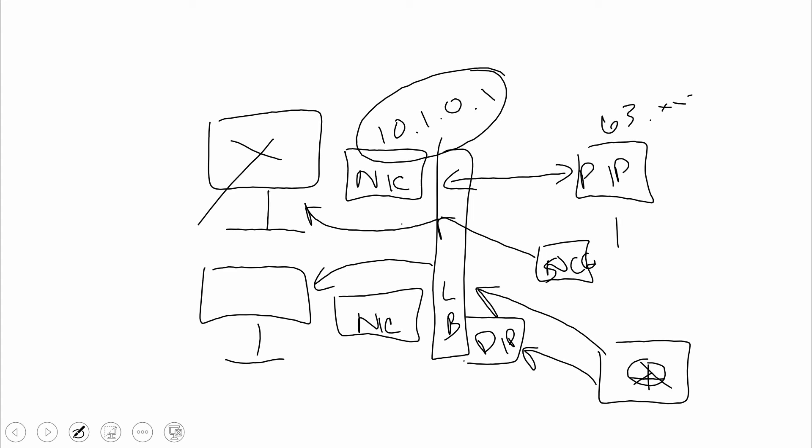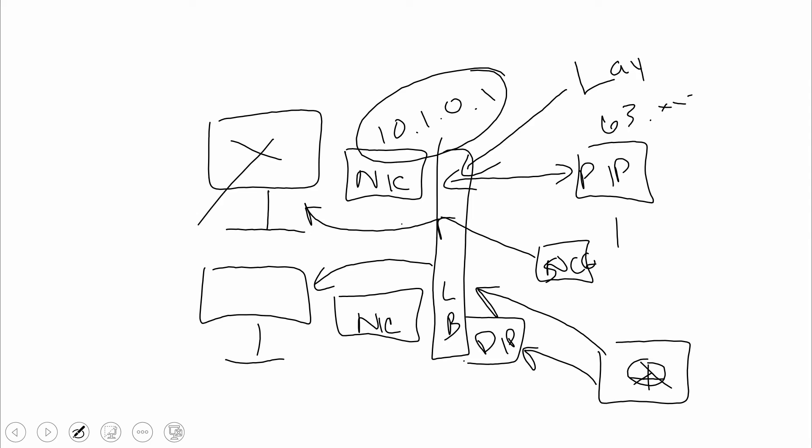These load balancers are layer four, so they can't go up into the application stack — things like SSL offloading or layer seven application-level features. They can only do a simple health probe to see if the machine is alive and then direct traffic to it. If you want to go up to layer seven on the OSI stack, you're going to use the application gateway.